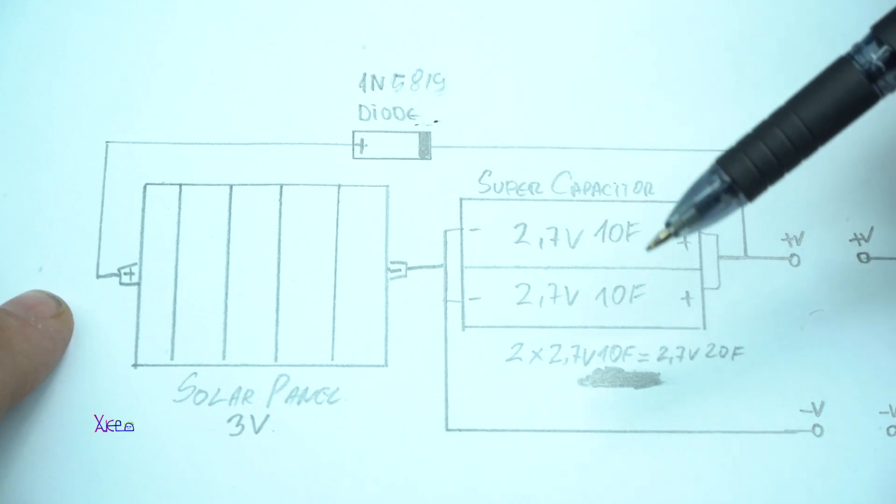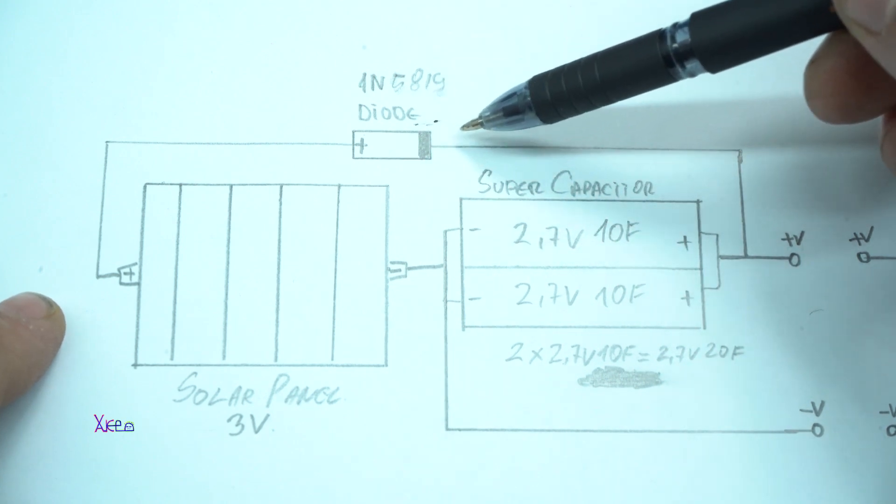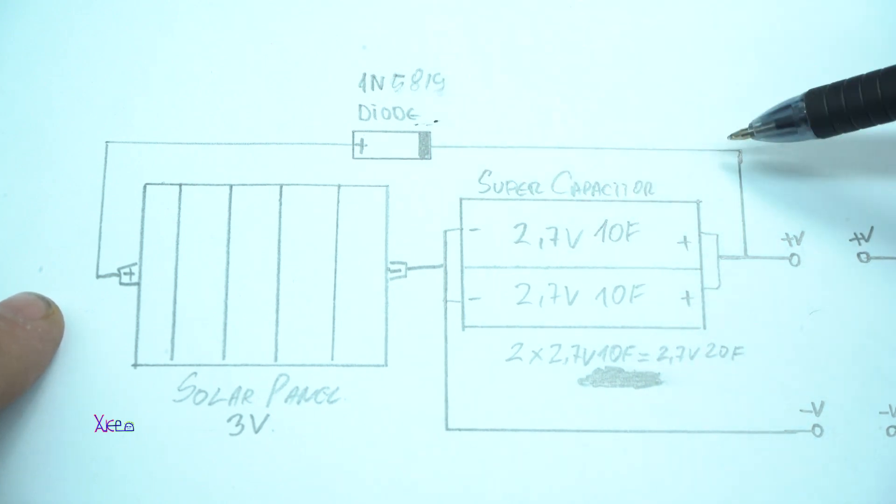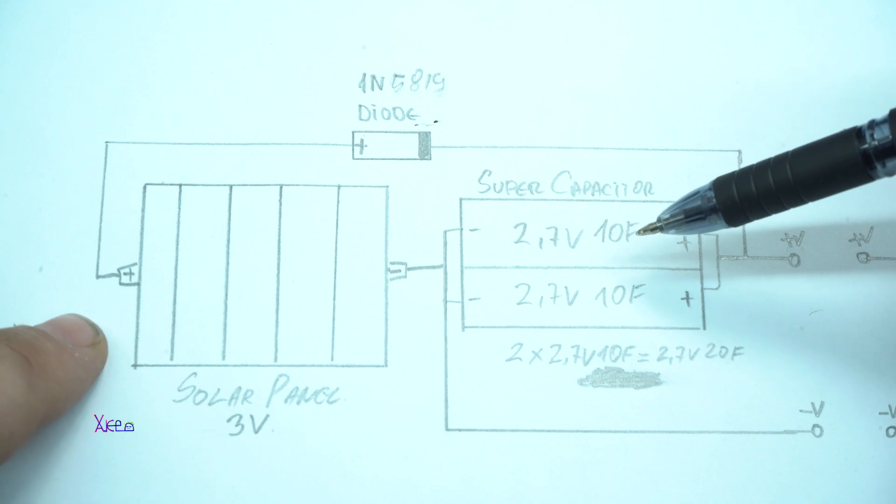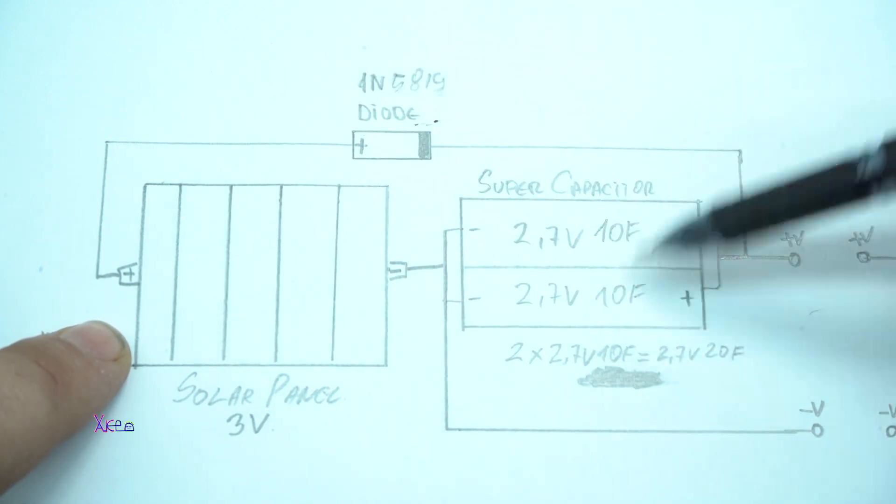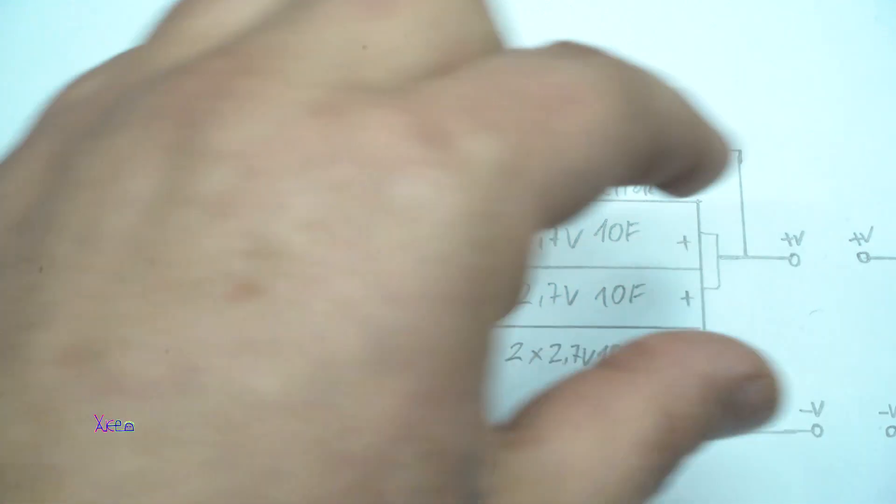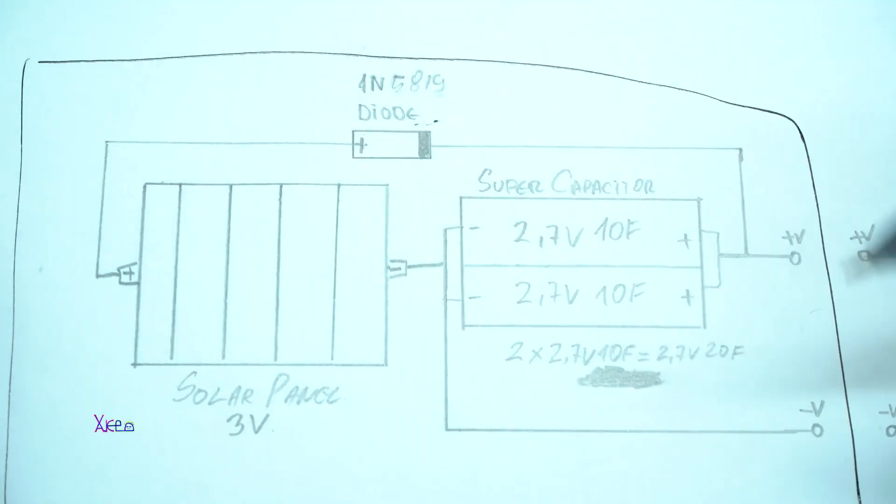From here, the positive voltage goes to the super capacitor on the positive side, charging the super capacitor acting like a battery. That means energy absorbed from the Sun through the solar panel goes to the diode to the battery. This is one unit.